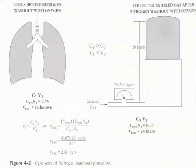This image shows that you start with the lungs before nitrogen is washed out, with a certain amount present. The patient receives 100% oxygen, the exhaled gas is measured and collected, and the actual volume is determined through calculations. You do not have to memorize all these mathematical formulas. It's just for you to understand the basic principles of helium dilution versus the nitrogen washout test.